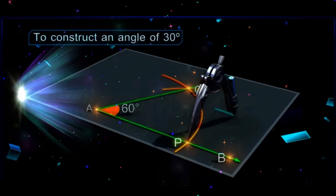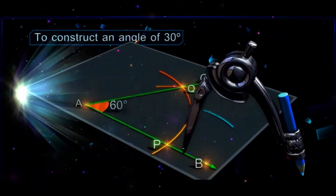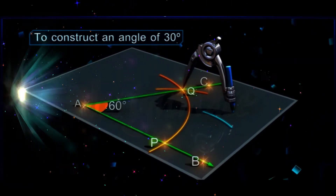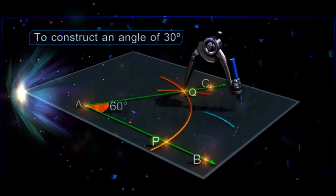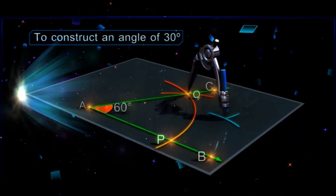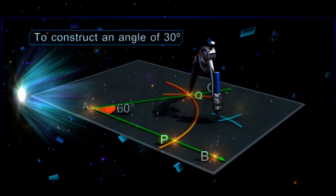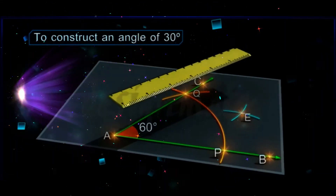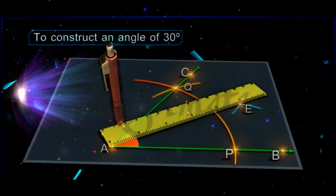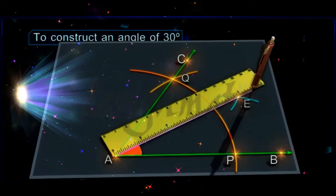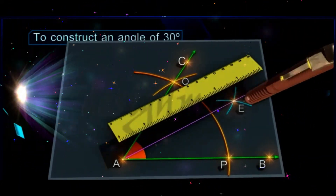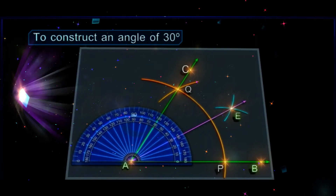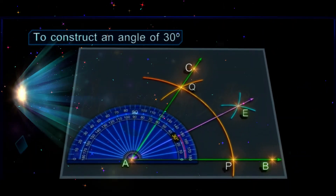With Q as center and the same radius, draw an arc intersecting the arc drawn earlier at E. Draw ray AE. Measure angle BAE is equal to 30 degrees.